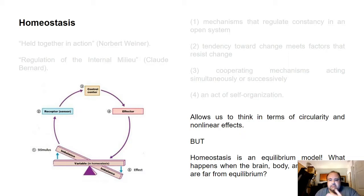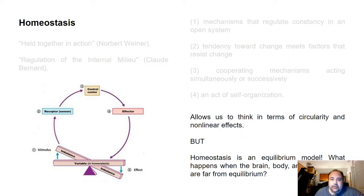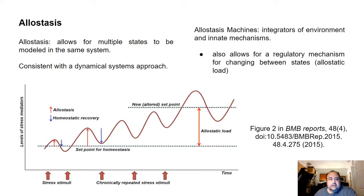This gives us a new view on the systems that regulate our internal state. But homeostasis is an equilibrium model — that's its drawback. What happens when the brain, body, and environment are far from equilibrium? In many naturalistic behaviors, they're very far from equilibrium. That's where we bring in allostasis.